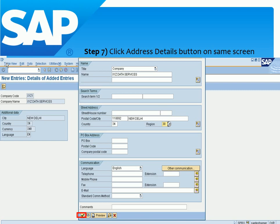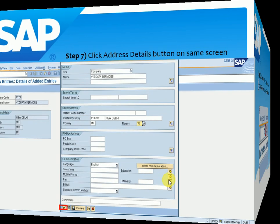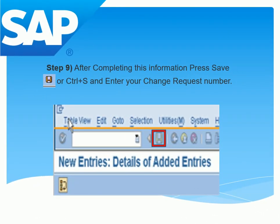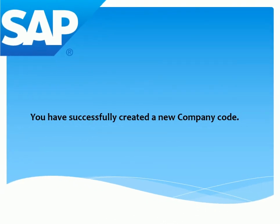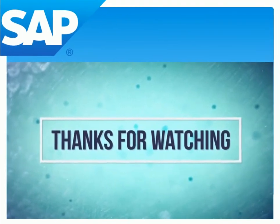After checking all the details, we have to save. After completing the information, press Save or Ctrl+S. We have successfully created a new company code. Thanks for watching — if you like this video please subscribe and click the bell button for more information.